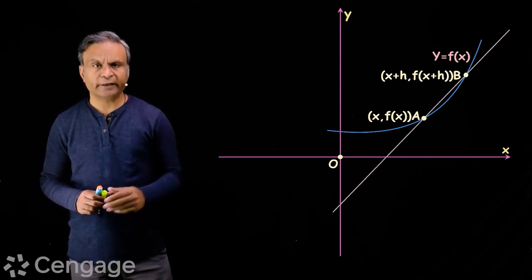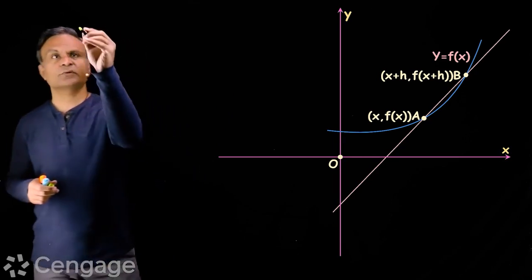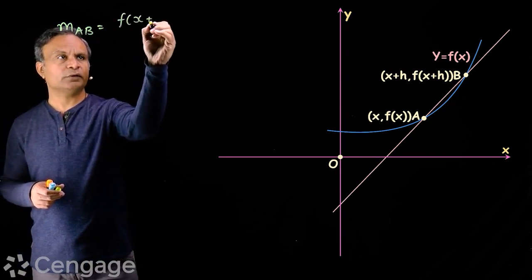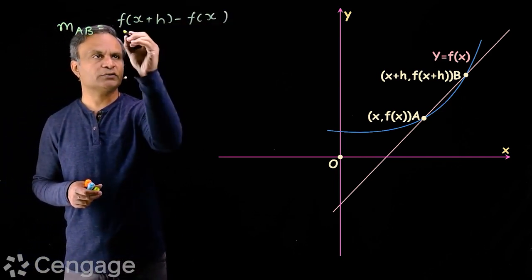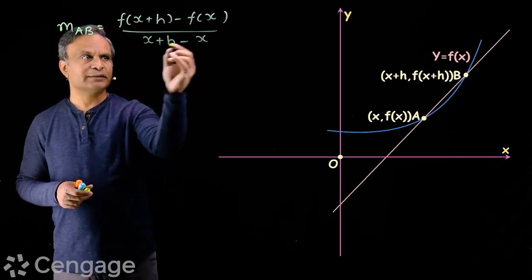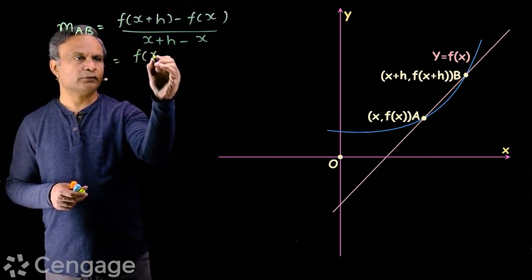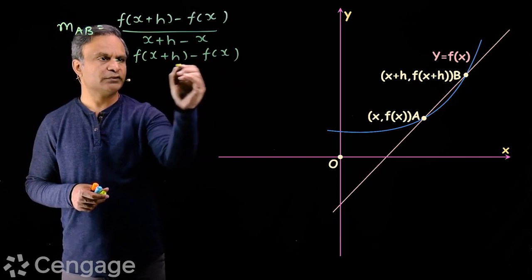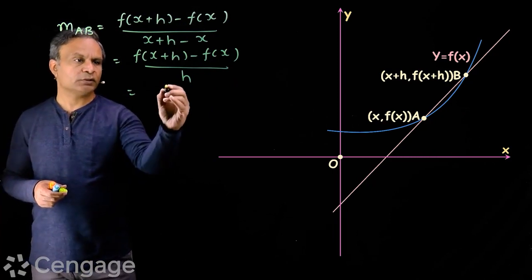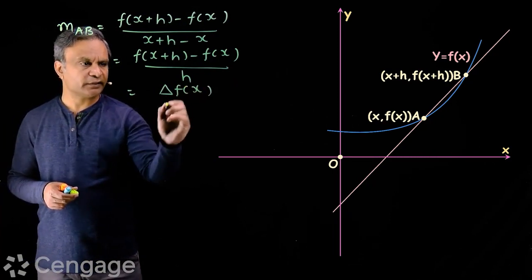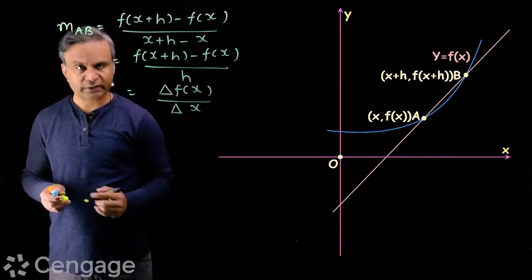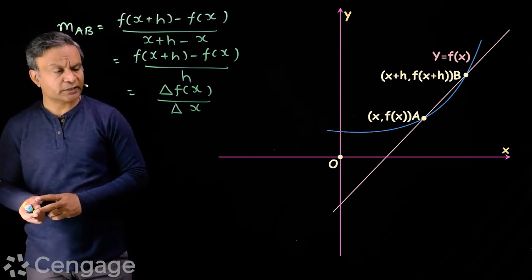Here h is positive because we are considering point B to the right of A. We join these two points and have a secant line AB. The slope of line AB is f(x+h) minus f(x) over x+h minus x, which equals f(x+h) minus f(x) over h. This is the change in value of f(x), denoted delta f(x). And h is the change in value of x, delta x. So we have the ratio delta f(x) over delta x.